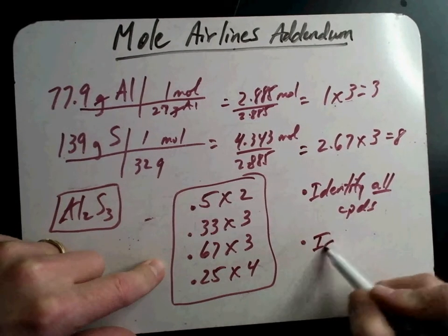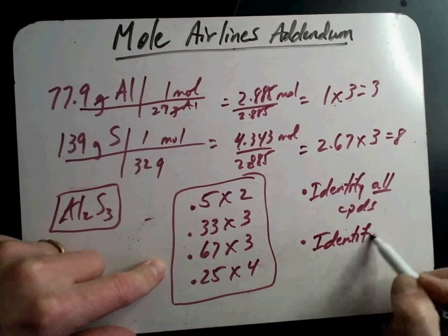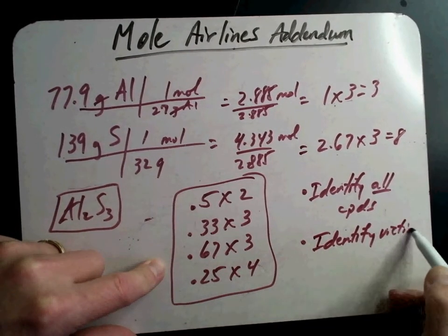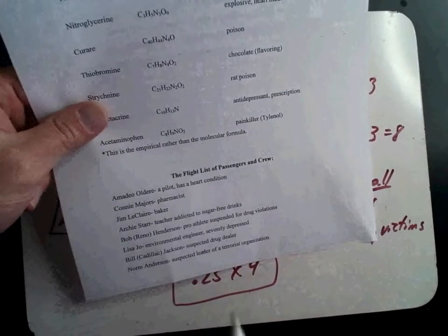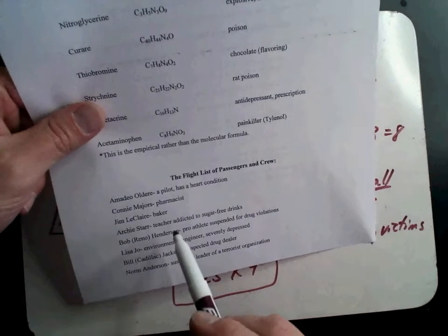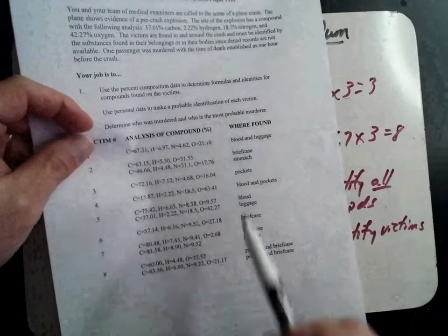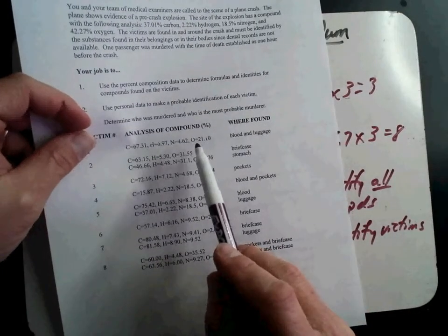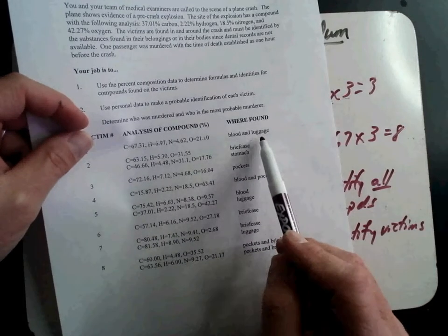In the second one, you're going to identify the victims of the plane crash, and those are going to be from the list, the flight plan list. So you have to get all the compounds before you can figure it out. Now, helpful hint, reminder on this side, when you figure out what the compound is, it tells you where it was located.